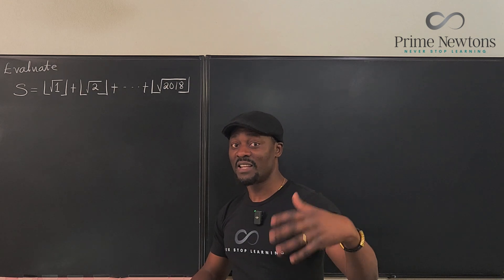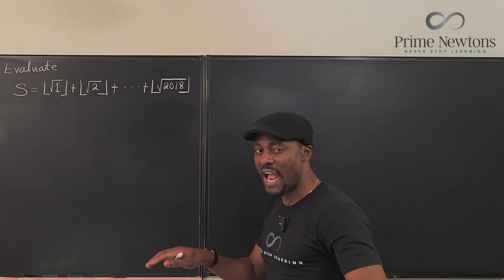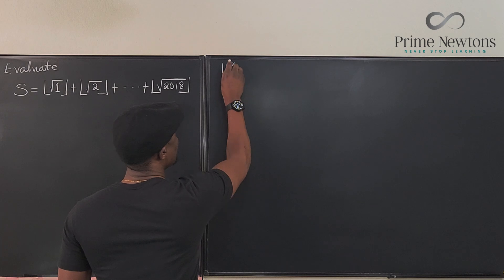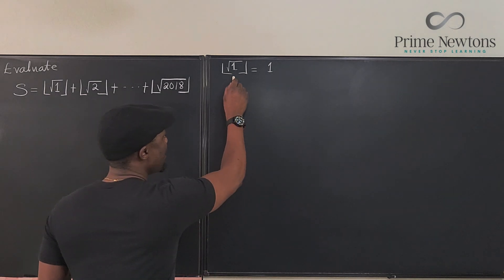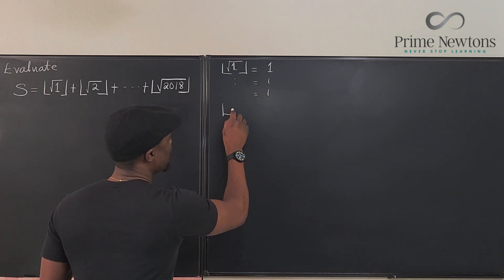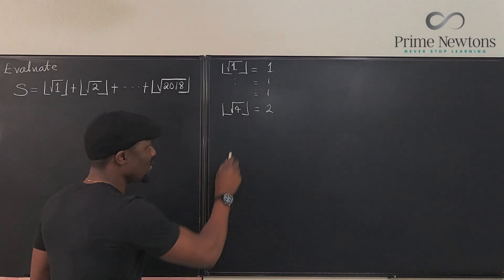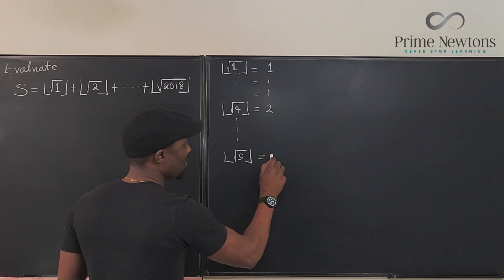You notice that you got one here, one here, one here. But as soon as you get to 4, the square root of four is 2, the floor is 2. And then that number, the floor stays the same until you get to 3 squared. And then the floor starts at 3 and continues until you get to 4 squared at 16.